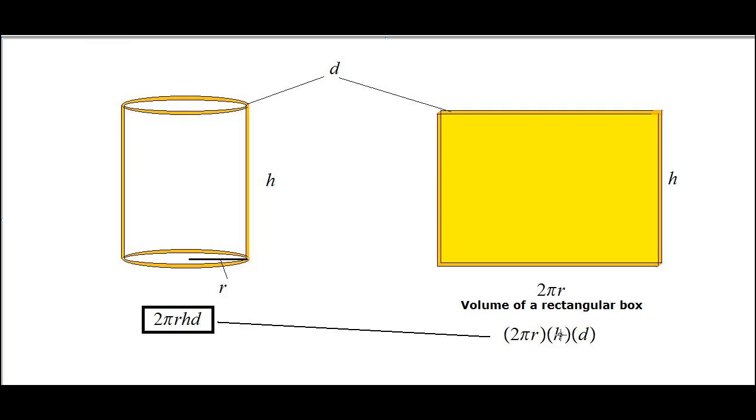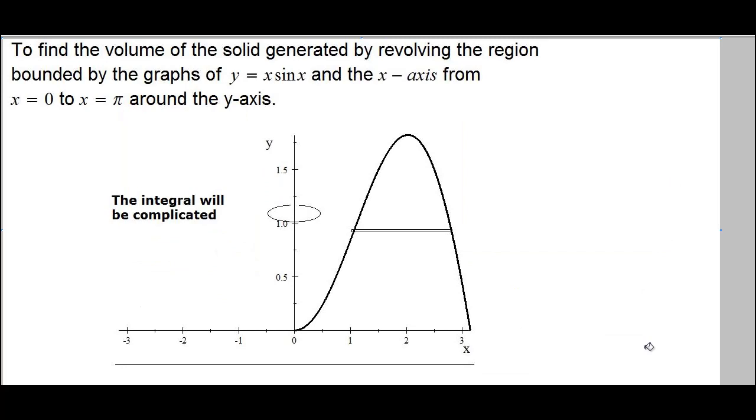Let's go ahead and apply that in the calculation of volume of a solid of revolution. Let's use this method of shells to find the volume of solid generated by revolving the region bounded by the graph of y equals x sin x between x equals 0 to x equals π and the x-axis around the y-axis.